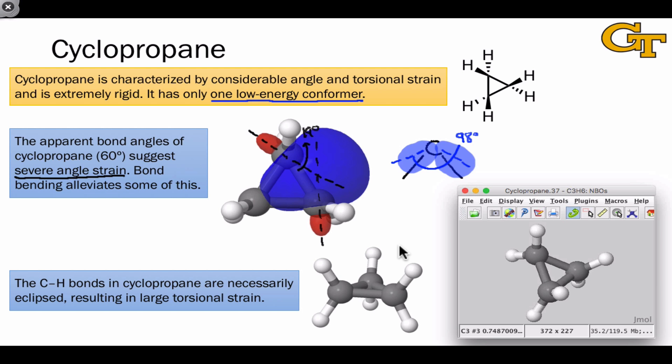The carbon-hydrogen bonds in cyclopropane are necessarily eclipsed, and we can see this by aligning the cyclopropane molecule so that we're looking down one of the carbon-carbon bonds in a Newman projection type view. You can see here that the front CH bonds are completely eclipsing the CH bonds in the back. Because these two carbons are acting like eclipsed ethane, as are all the other pairs of adjacent carbons in this molecule, the molecule exhibits large torsional strain relative to propane, where all of the CH bonds are staggered. These two effects, the severe angle strain and the large torsional strain, explain the instability of cyclopropane relative to propane.